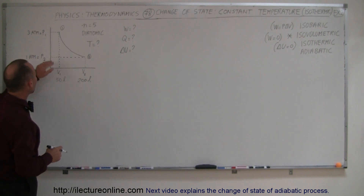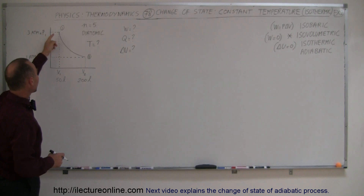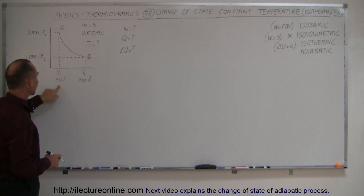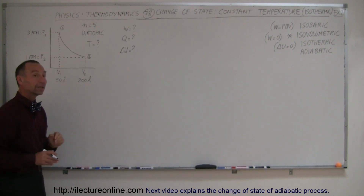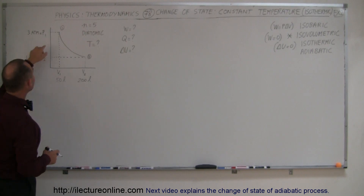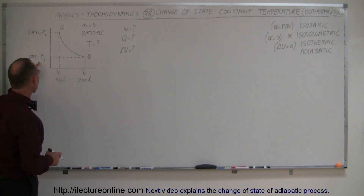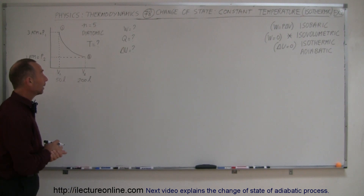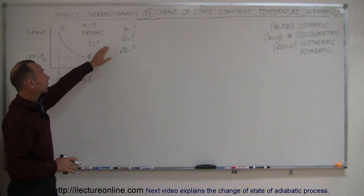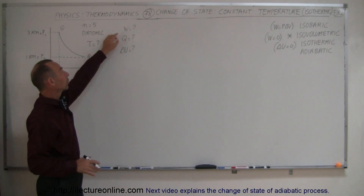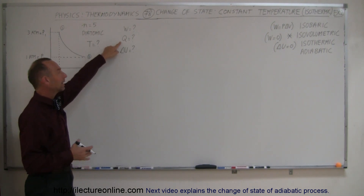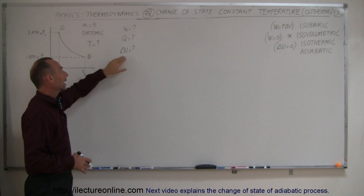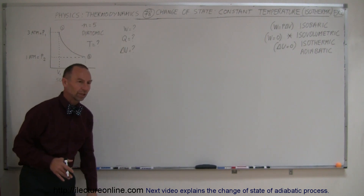We are allowing a gas to do some work, having it expand isothermally from a volume of 50 liters to a volume of 200 liters. It does that by changing the pressure from an initial pressure of three atmospheres down to one atmosphere. We need to find the work done, the amount of heat exchanged to the gas, and the change in internal energy.